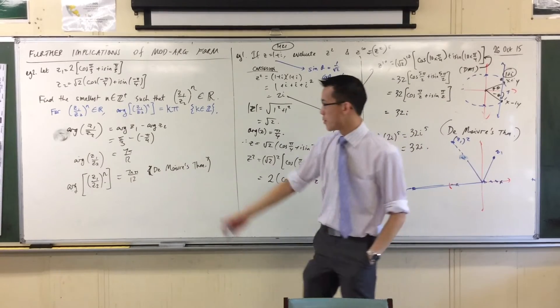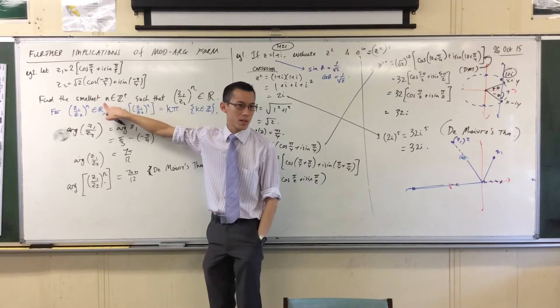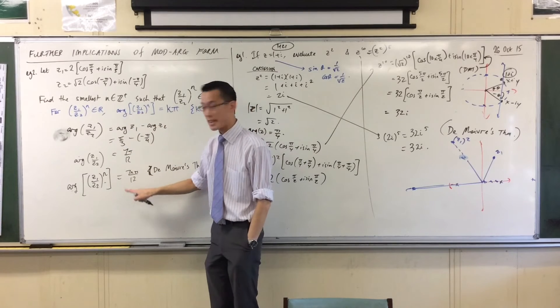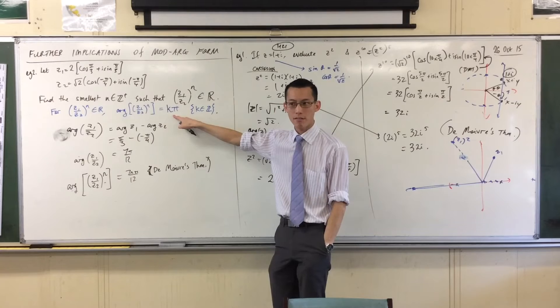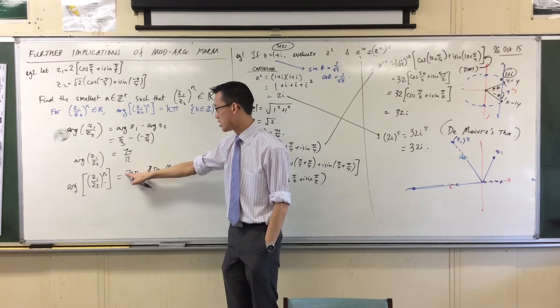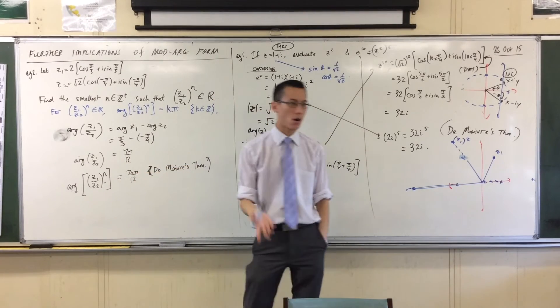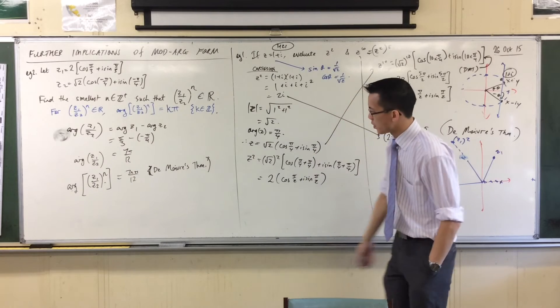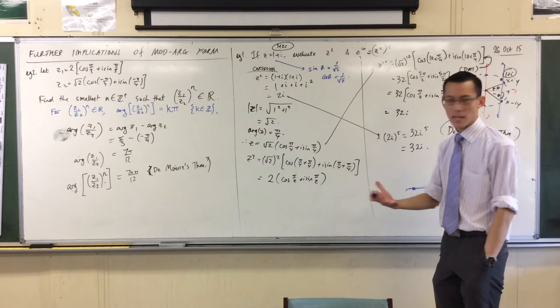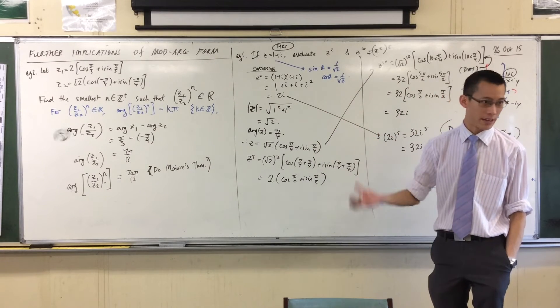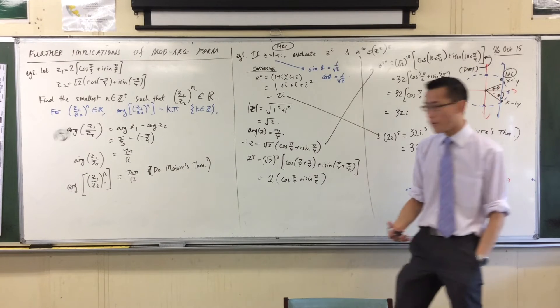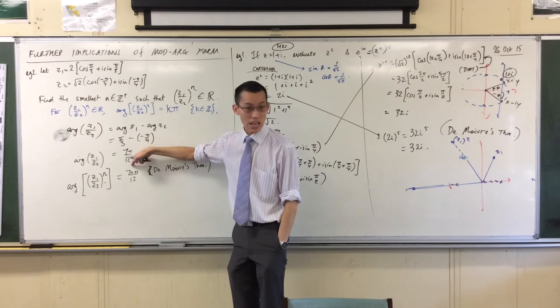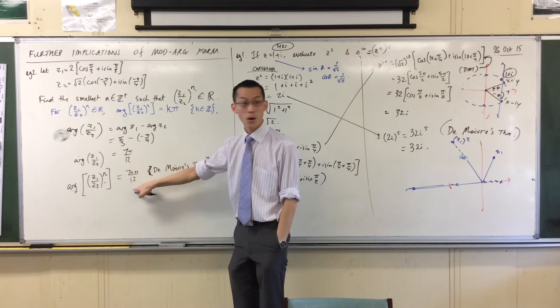So, now the question, remember, is find the smallest positive integer for n that's going to make that a whole number. Do you see that? I want 7n/12 to be a whole number. Now, 7 and 12 are what we call, well, 7's a prime number. So, it's not going to share anything with 12 except for 1, which is not very useful. So, therefore, what number do I have to multiply 7 by such that it'll go into 12? The answer is 12.